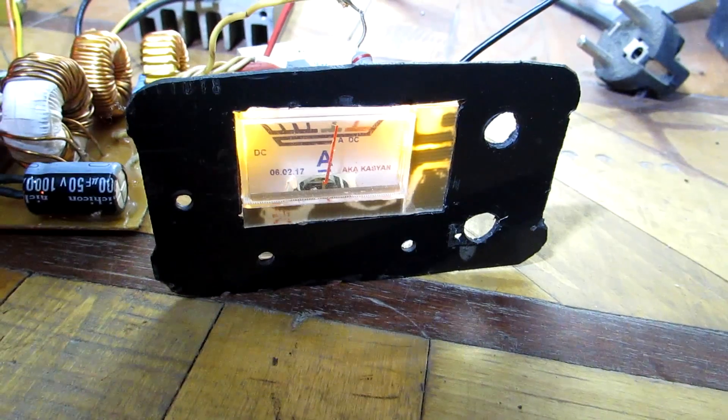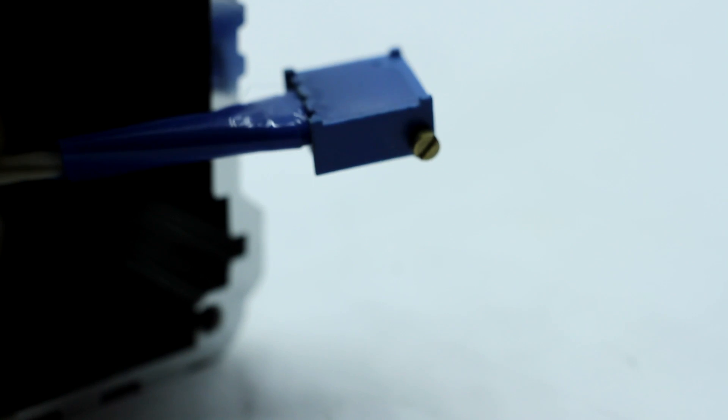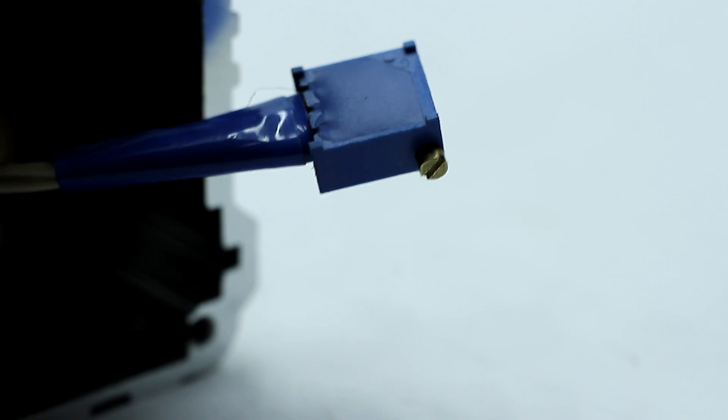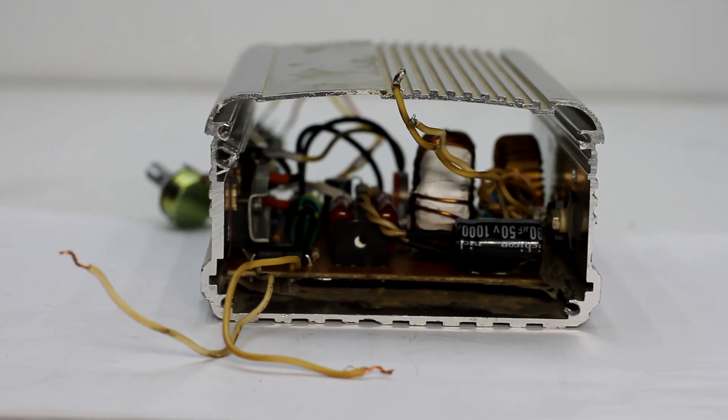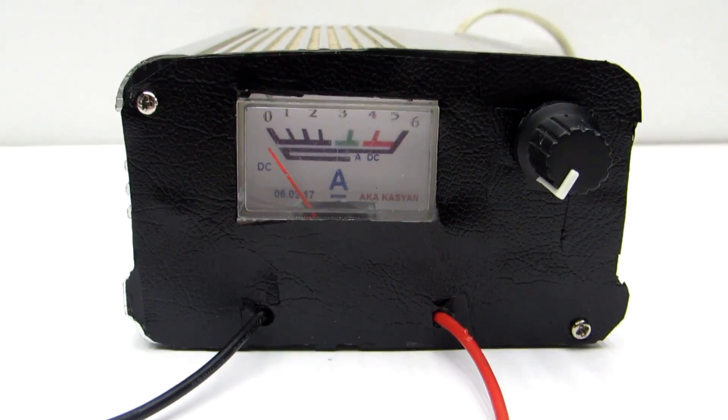Since this source is only for charging car batteries, a resistor, which is responsible for adjusting the output voltage, was selected for value from 14.12 to 14.5 volts. Then it was hidden away in the depths of the box. But the current regulator was placed on the front panel, which is made of plastic.